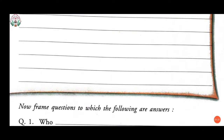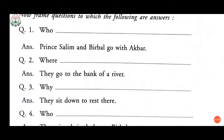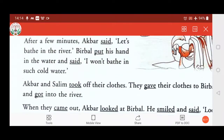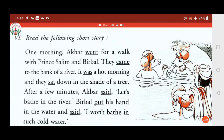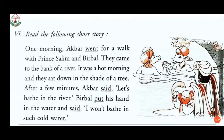After this, based on that paragraph, we have question and answer here, in which answers are given and you have to make a question for each answer. The first example: the answer is 'Prince Salim and Birbal go with Akbar.' We need to form a question for that. In the paragraph it says: 'One morning, Akbar went for a walk with Prince Salim and Birbal.'